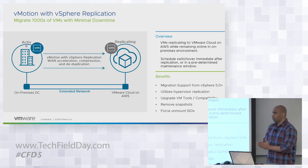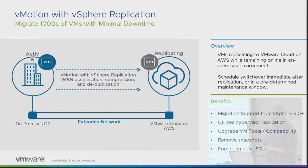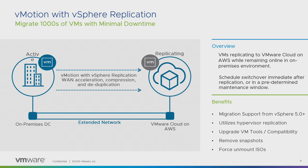One of the workload mobility options we have is HCX vMotion with vSphere replication. The beauty of this one is we can do this with no downtime whatsoever. It uses vSphere replication to replicate the VMDKs from on-prem to the destination — VMware Cloud on AWS. Then at some point it will schedule the delta sync, and it just cuts everything over once the vMotion kicks in. There's no downtime whatsoever. You can schedule this or do it hot depending on your choosing.